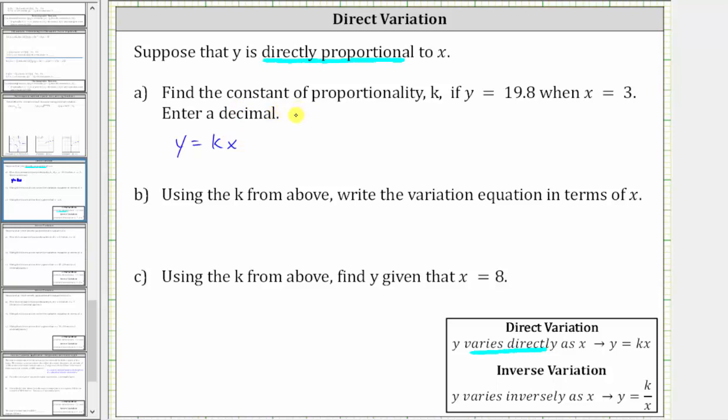Part A, find the constant of proportionality k if y equals 19.8 when x equals 3. So to find k, we substitute 19.8 for y and 3 for x. Performing the substitution gives us 19.8 equals k times 3.